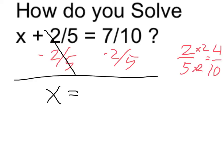So if I do 7 tenths minus 4 tenths, that leaves me with 3 tenths. Therefore, x itself must be 3 tenths.